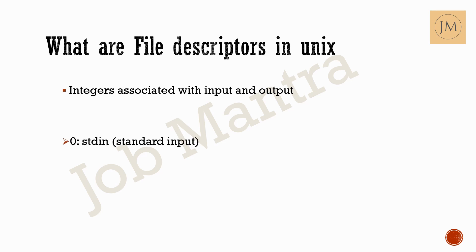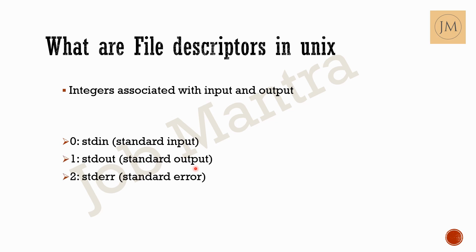There are three normally reserved types of file descriptors: zero, one, and two. Zero is standard input, one is standard output, and two is standard error. These three file descriptor integers are the reserved ones. If you want customized file descriptors, you can use number three onwards.